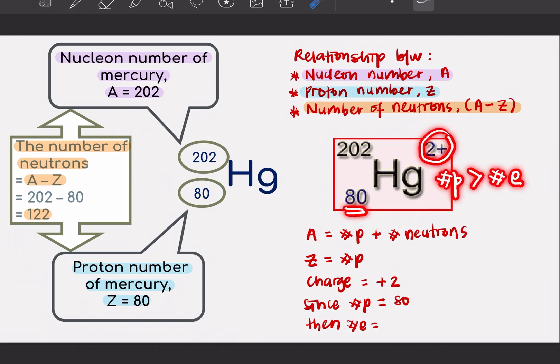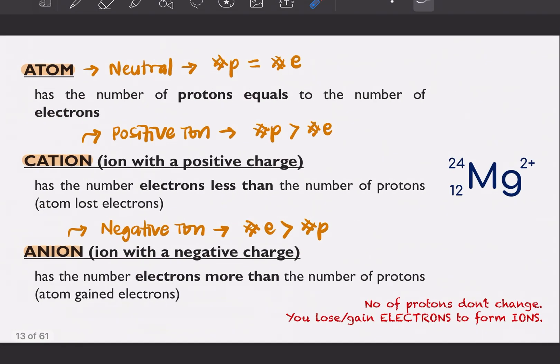When you have charge, that means that you form your cation or anion by losing or gaining electron. I will go into further detail on the next slide.